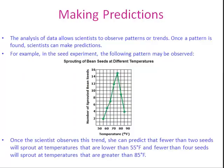The analysis of data allows scientists to observe patterns or trends. Once a pattern is found, scientists can make predictions. For example, in our seed experiment, once the scientist observes this trend, she can predict that fewer than two seeds will sprout at temperatures lower than 55 degrees, and fewer than four seeds will sprout at temperatures greater than 85 degrees. So she can find the optimum temperature for sprouting of those seeds.